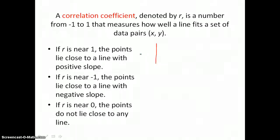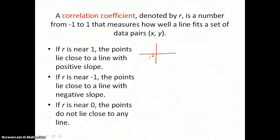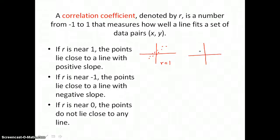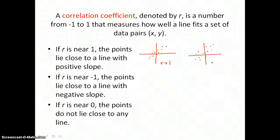We can represent that graphically where all of the data points are close to some best-fitting line that rises from left to right — we say the correlation coefficient r is equal to 1. But if that data is loosely represented by a line that slants upward from left to right, then we might say that r is equal to 0.5.